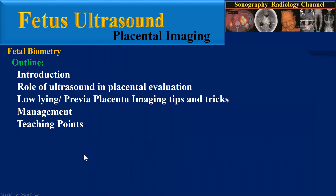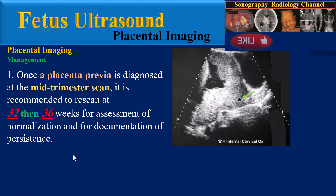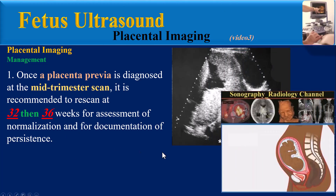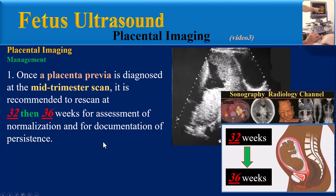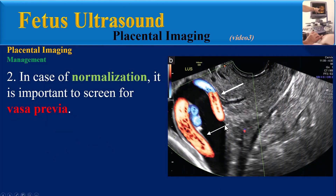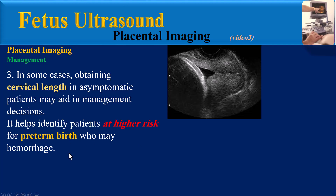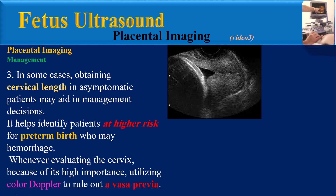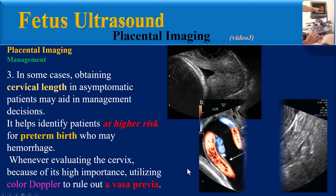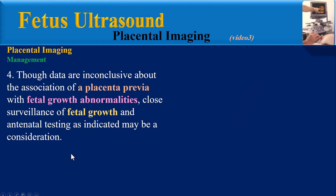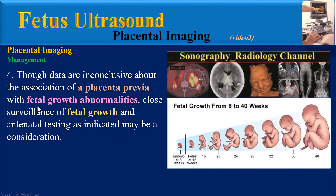Once a placenta previa is diagnosed at the mid-trimester scan, it is recommended to re-scan at 32 and then at 36 weeks gestation to assess for normalization and document persistence. In cases of normalization, screen for vasa previa. Obtaining cervical length measurements in asymptomatic patients may aid in management decisions, identifying patients at higher risk for preterm birth who may hemorrhage. Color Doppler should be used to rule out vasa previa whenever evaluating the cervix.